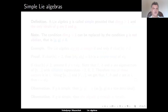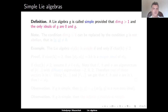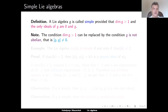Let's start with the definition of a simple Lie algebra. A Lie algebra G is called simple, provided that it has dimension greater than 1 and the only ideals of G are the zero ideal and G itself. The condition that the dimension of G is greater than 1 can be replaced by the condition that G is not abelian — in other words, that the derived algebra of G is non-zero.